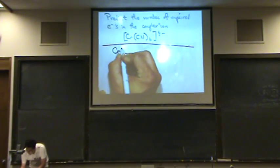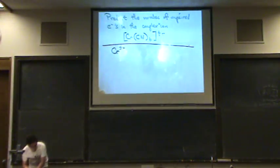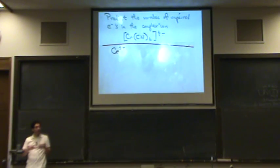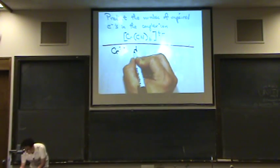So it's chromium 2 plus. Chromium is in the sixth column of the periodic table. So 6 minus 2, there's 4 electrons. And we write that D4.